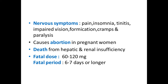Nervous system symptoms include pain, insomnia, tinnitus, impaired vision, formication (feeling of creeping insects under the skin), cramps, and paralysis. It causes abortion in pregnant women. Death results from hepatic and renal insufficiency. The fatal dose of phosphorus is 60 to 120 mg, and the fatal period is 6 to 7 days or longer.